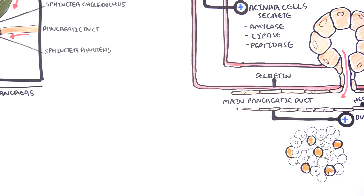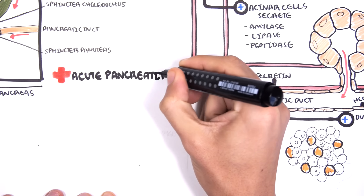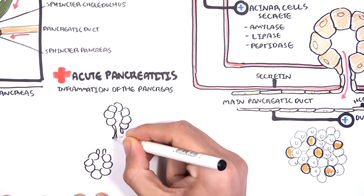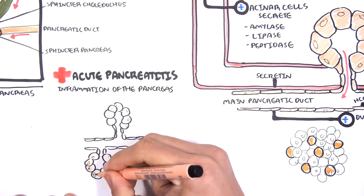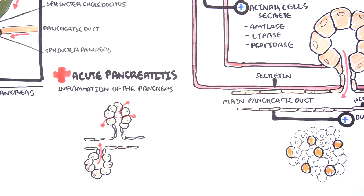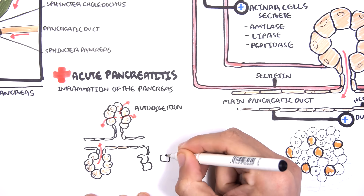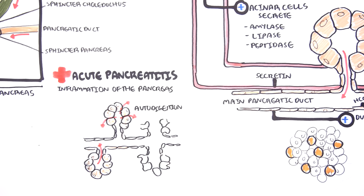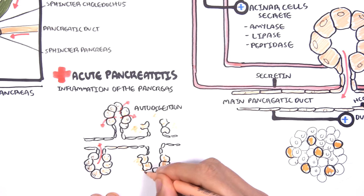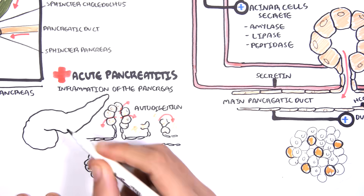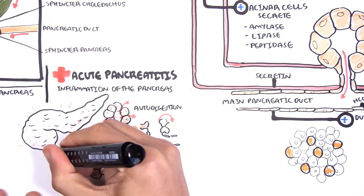When glucose is absorbed, it stimulates the pancreas to produce insulin. In clinical anatomy, acute pancreatitis is acute inflammation of the pancreas caused by many factors, most commonly gallstones and alcohol. The pathophysiology involves autodigestion — enzymes, particularly proteases and lipases, escape the pancreatic duct and digest surrounding tissue, causing inflammation and severe epigastric pain.